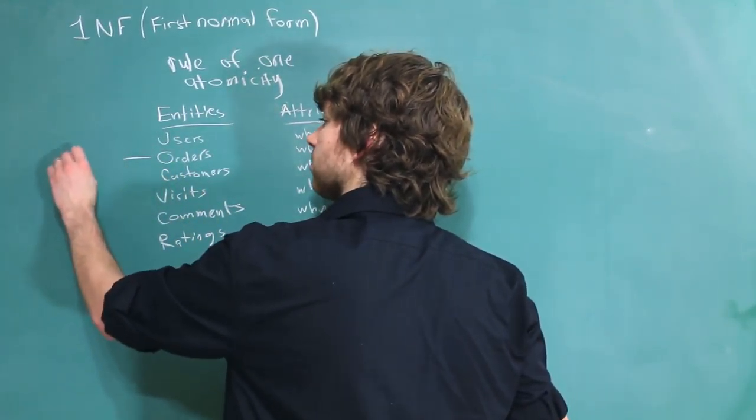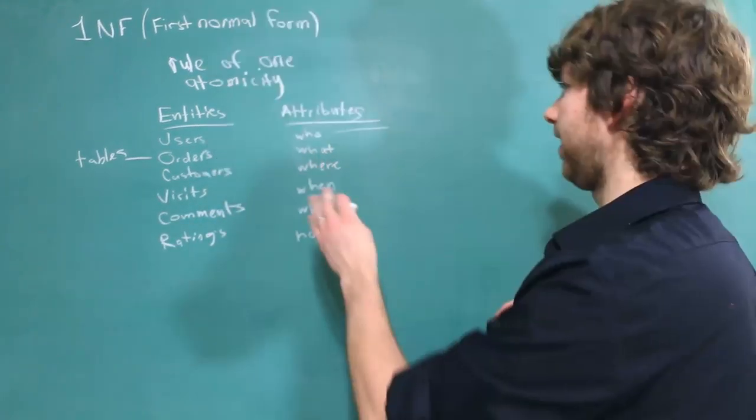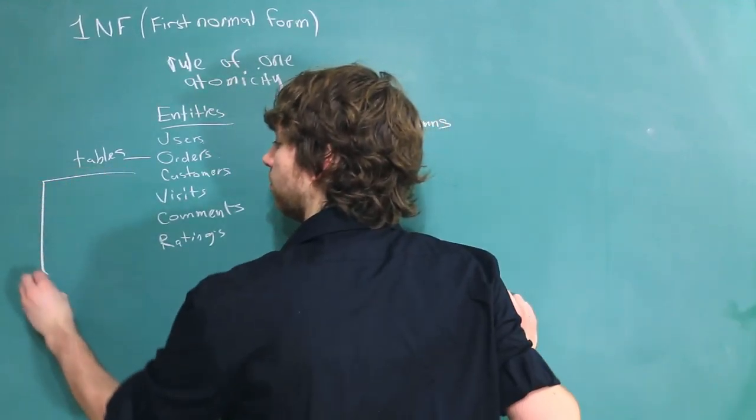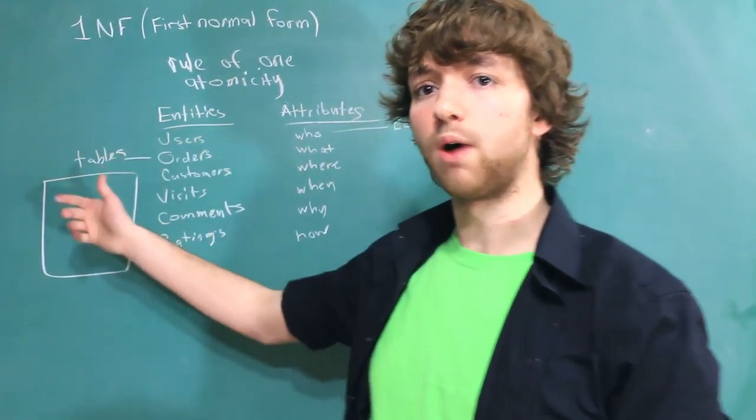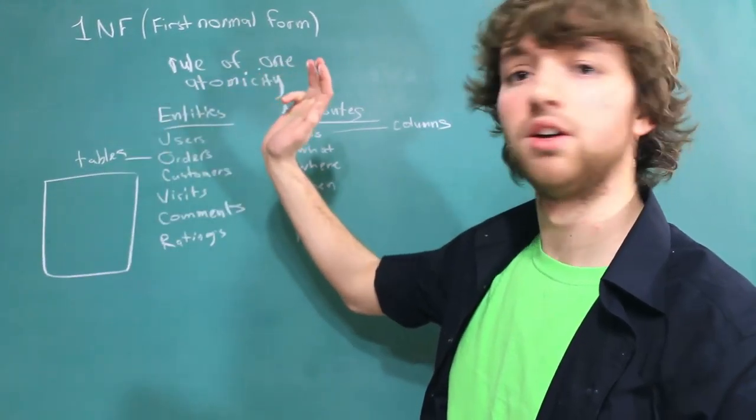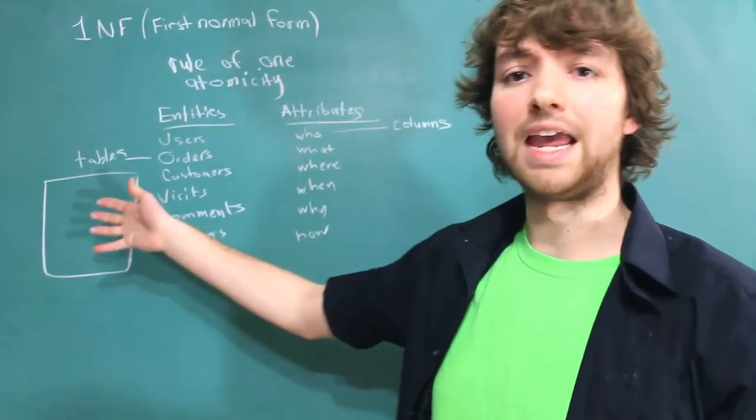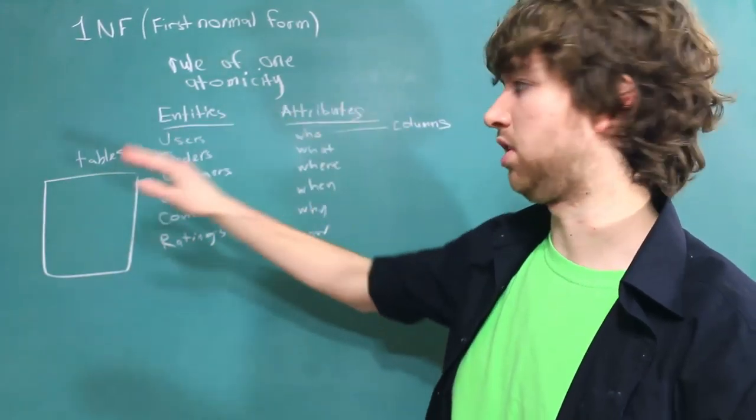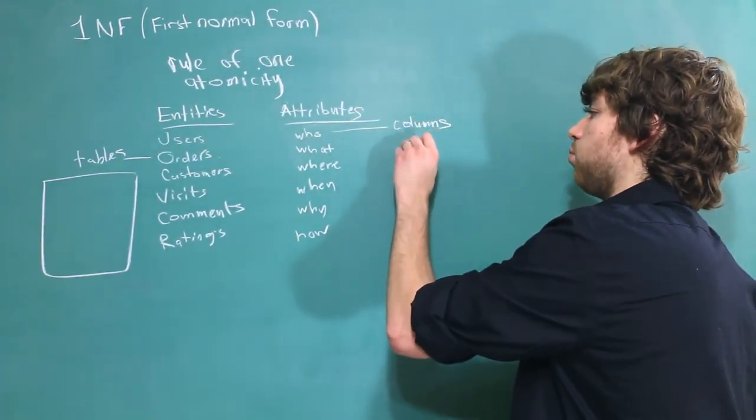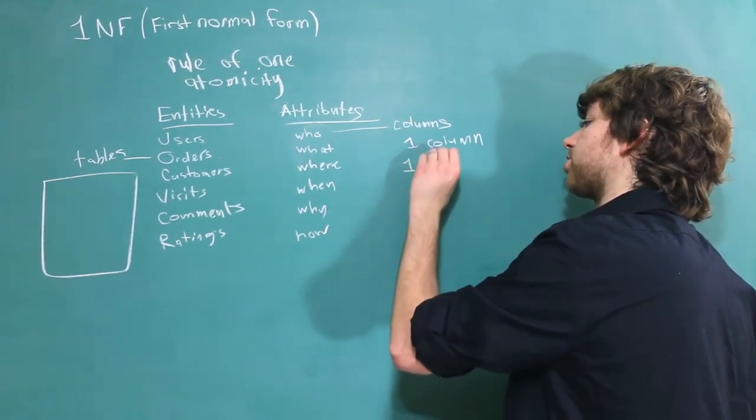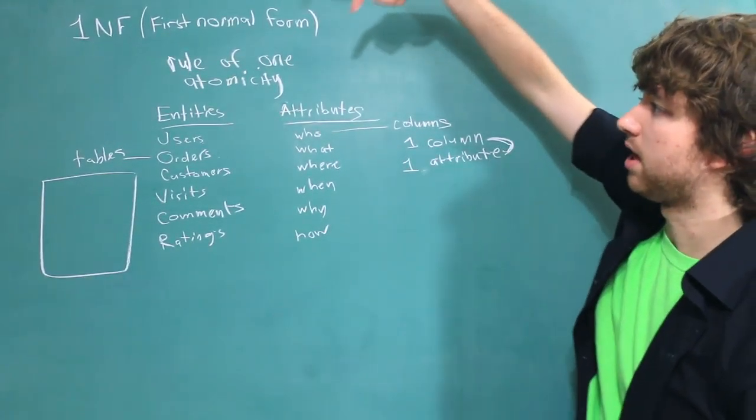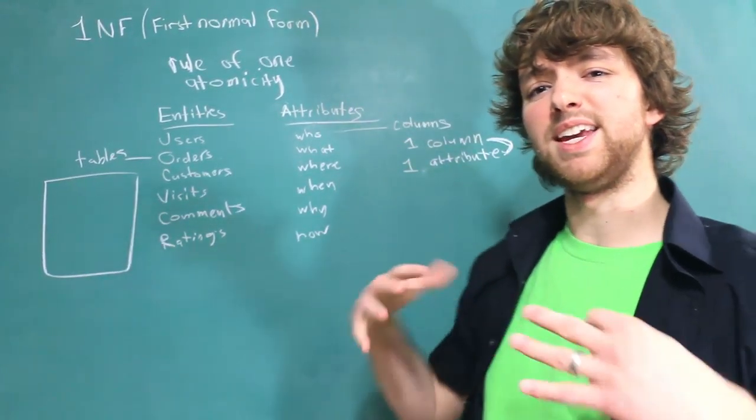Entities go into tables. Each one of these is going to be their own table. Attributes become columns. So for a specific order, inside of that table, we are going to have all of the columns I mentioned. Who bought it, what they bought, where they bought it, if there's a store location, the date and time of when they bought it, all of that information becomes a column. But it's important that each attribute is one column, and one column describes only one attribute. This here is essentially how we describe atomicity. Every column is indivisible.